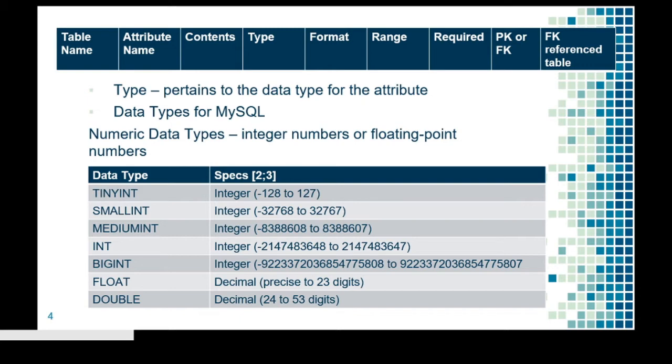For example, TINYINT, SMALLINT, MEDIUMINT, INT, and BIGINT are for integer numbers, while FLOAT and DOUBLE are for decimal numbers.